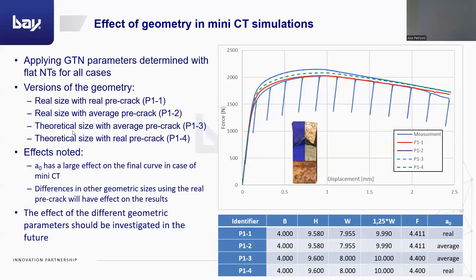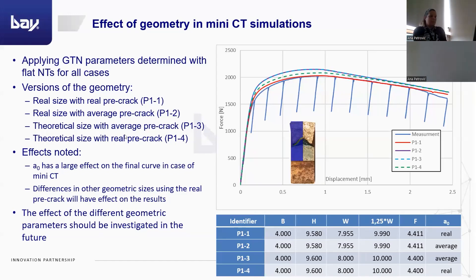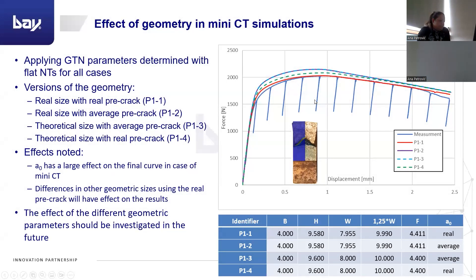And finally, the fourth version is where the theoretical size was used with real pre-cracking, and it can be seen that this is also going above the measured values. Therefore, it is essential that in the case of miniaturized CT specimens, the geometry has a large effect on the results, and this should be investigated in the future to determine which parameter affects these results most.